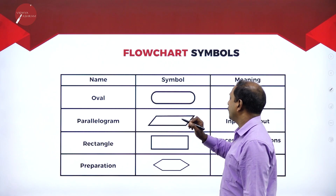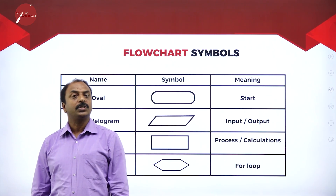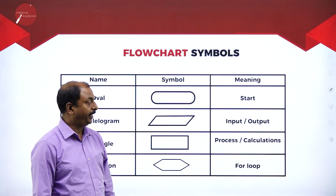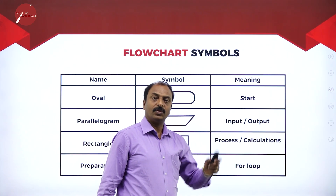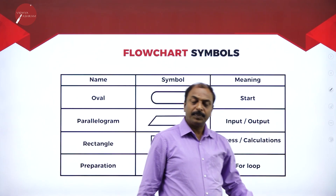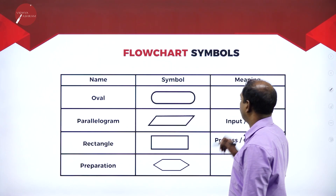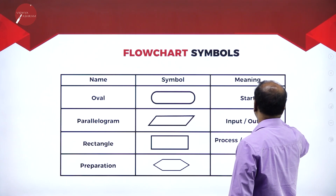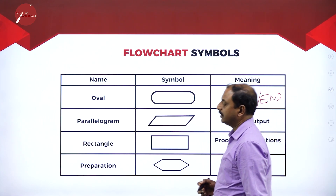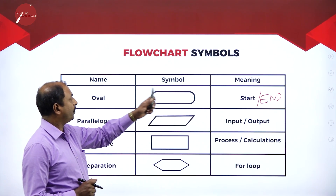The first shape is the oval. This oval indicates start. Every algorithm and flowchart must start and must end at a particular point. To represent the beginning of a flowchart we use this oval shape. The oval is also used to represent the end of the flowchart — so it defines both the start and end of a flowchart.